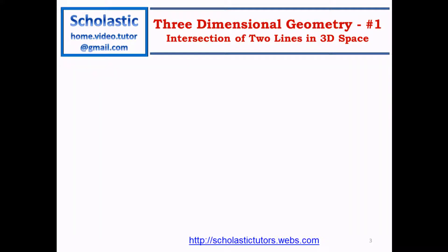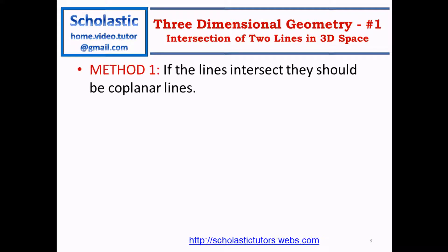To solve this problem there are two methods. Let's see the first method. If the lines intersect, they should be coplanar lines — it's a very basic principle in 3D geometry. If the lines don't intersect, they will be in two different planes. The only exception is if they are parallel, but if they are not parallel, then they should intersect, and if they intersect they should lie in a single plane — coplanar lines.